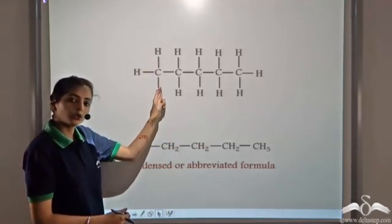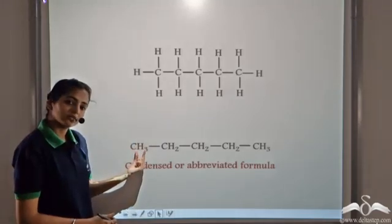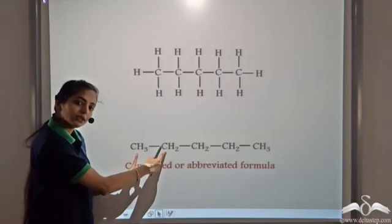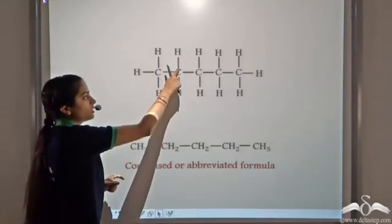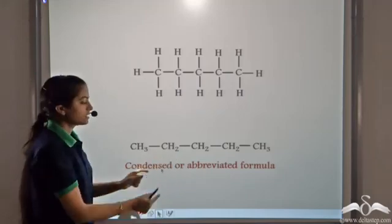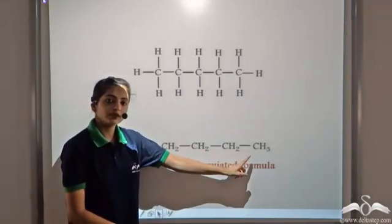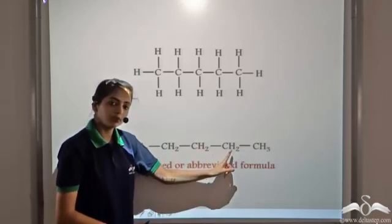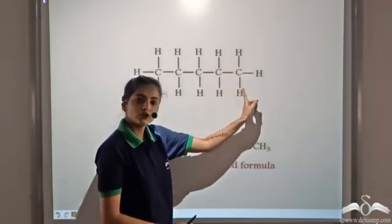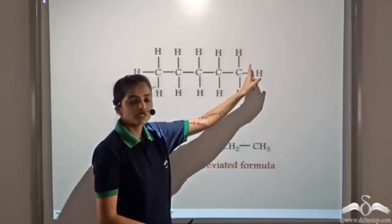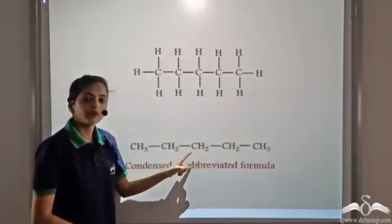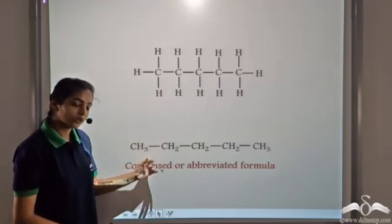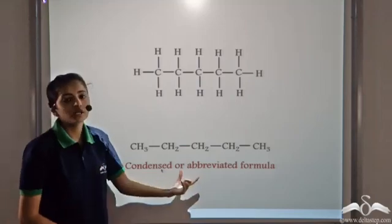We remove these single covalent bonds and we simply write CH3. This covalent bond is present to show the linkage between the two carbon atoms. Again we can remove these covalent bonds and simply write H2. Similarly for all the other carbon atoms, the linkages between carbon and hydrogen atoms can be removed and we simply write the number of hydrogen atoms. So we have shortened the structural formula into the condensed or abbreviated formula.